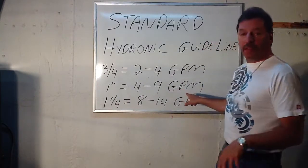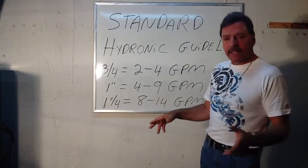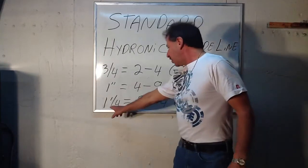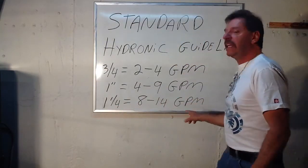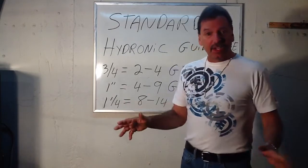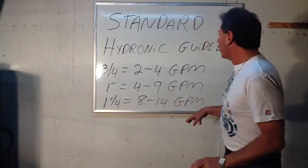If you needed more than that for some astronomical reason, maybe you're doing the Empire State Building, inch-and-a-quarter will give you eight to fourteen gallons a minute. An inch-and-a-half will give you fourteen to twenty-two gallons a minute.